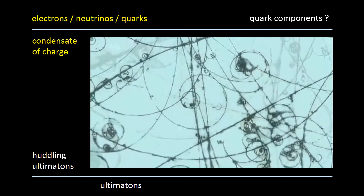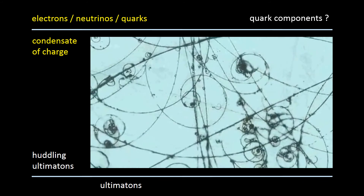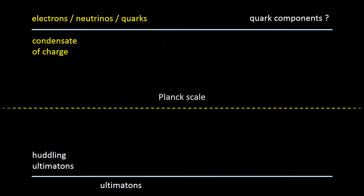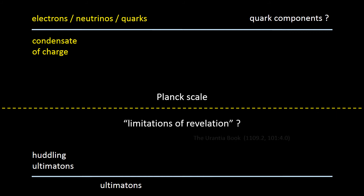Scientists really do wonder about the internal structure of quarks. But there's a problem: if leptons and quarks are made from smaller parts, then the next natural level down is the so-called Planck scale, which implies inaccessible energies and lengths. So any such internal substructure would seem to be forever beyond human capacity to prove. But if something is beyond human capacity to prove, do those quote 'limitations of revelation' from paper 101 still apply?